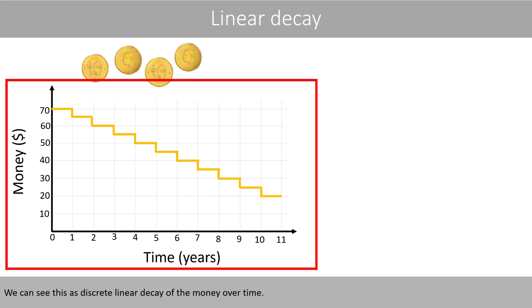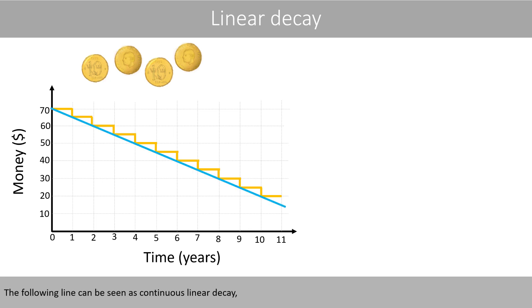We can see this as discrete linear decay of the money over time. The following line can be seen as continuous linear decay, because the money decreases continuously, which can be seen as we remove a tiny amount of money every second.